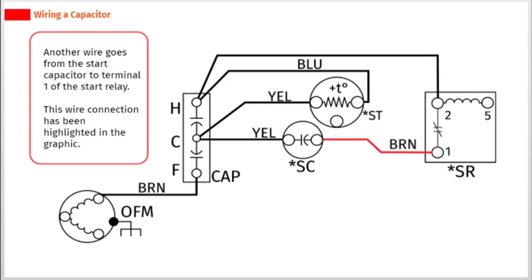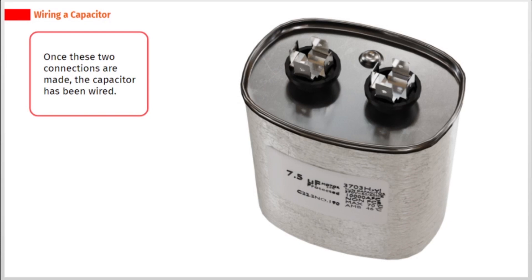Another wire goes from the start capacitor to terminal one of the start relay. This wire connection has been highlighted in the graphic. Once these two connections are made, the capacitor has been wired.